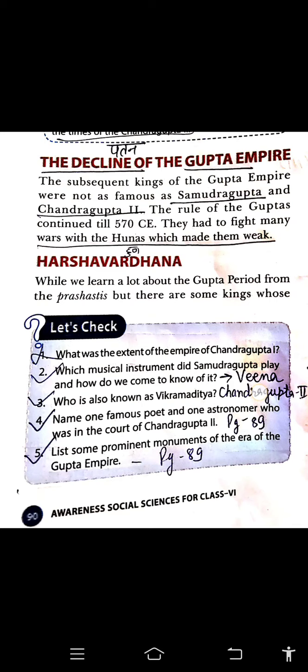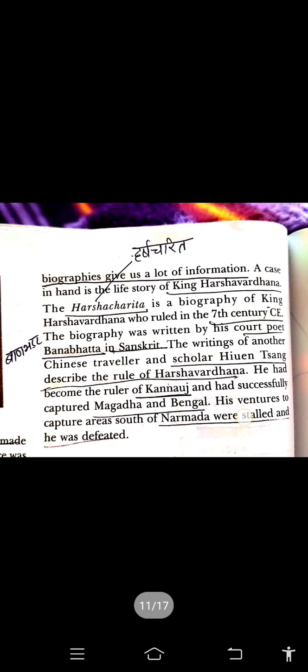Harshvardhan is a very, very famous king, and we read a lot of biographies about his life. There is a life story of King Harshvardhan, and the name of his biography is Harshcharitra. Harshcharitra covers Harshvardhan's life from start to finish. Who wrote the Harshcharitra? It was written by his court poet Ban Bhatt in Sanskrit. The biography of Harshvardhan, named Harshcharitra, was written by Ban Bhatt.